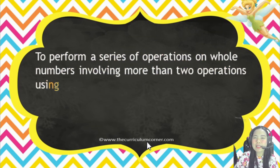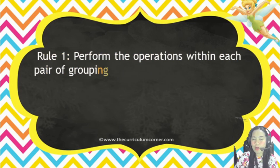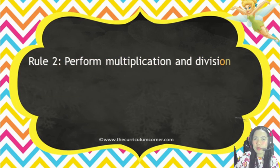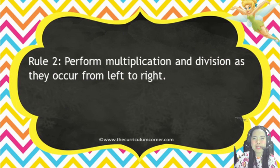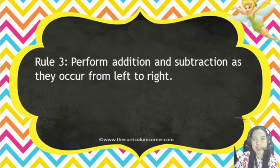To perform a series of operations on whole numbers involving more than 2 operations using PEMDAS or GEMDAS rules: Rule number 1, perform the operations within each pair of grouping symbols first — parentheses, brackets, or braces. Rule number 2, perform multiplication and division as they occur from left to right. Rule number 3, perform addition and subtraction as they occur from left to right.